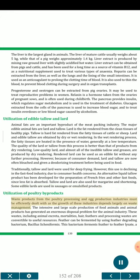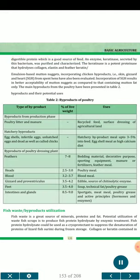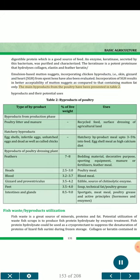Utilization of poultry by-products. Waste products from the poultry processing and egg production industries must be efficiently dealt with as the growth of these industries depends largely on waste management. The intensive and large-scale production of food animals has generated an enormous disposal problem. These wastes, including animal excreta, mortalities, hair, feathers and processing wastes, are convertible to useful resources. Feather can be fermented by using feather-degrading bacterium Bacillus licheniformis. This bacterium ferments feather to feather lysate, a digestible protein which is a good source of feed. An enzyme, keratinase, secreted by this bacterium, was purified and characterized. The keratinase is a potent proteinase that hydrolyzes collagen, elastin and feather keratin. Emulsion-based mutton nuggets incorporating chicken by-products — skin, gizzard and heart (SGH) — from spent hens have also been evaluated. Incorporation of SGH results in better acceptability of mutton nuggets compared to those containing mutton fat only. The main by-products from poultry are presented in Table 2.